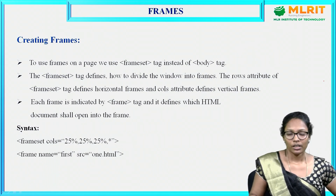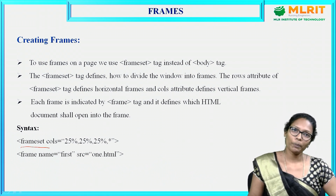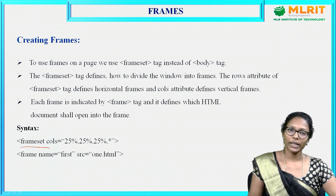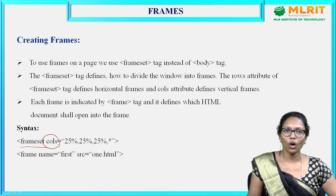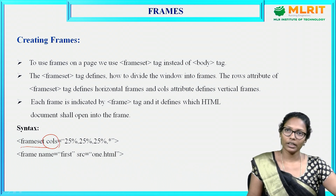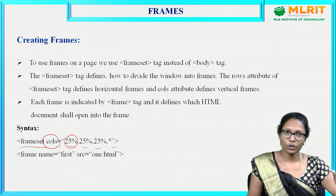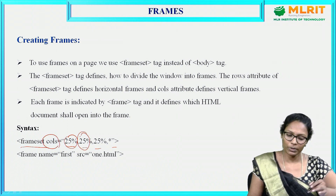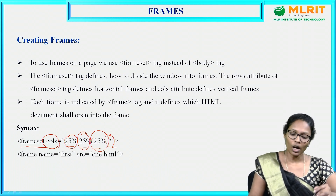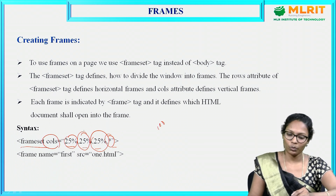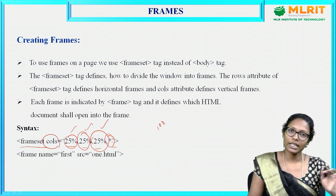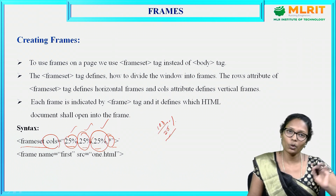To create frames, the frameset tag is used to divide your page into multiple rows or columns. If you want to divide the page into columns, use the 'cols' attribute; for rows, use the 'rows' attribute. For example, dividing into four columns: the first column is 25%, the second is 25%, the third is 25%, and the star symbol indicates the remaining percentage — so the fourth frame takes the remaining 25%.